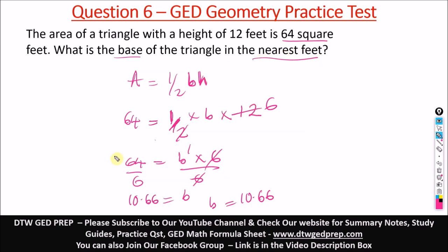To the nearest feet means we're looking at the whole number. So we have 10 here. Immediately after the decimal point, is this number greater than or equal to five? It is greater than five, so we can add one to the 10. So we finally have 11. To the nearest feet, our base is 11 feet. This is our answer.